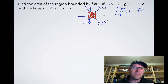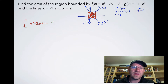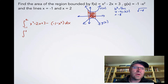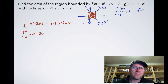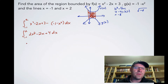To find the area, we take the integral from negative one to two of f of x minus g of x dx — that is, the integral of (x squared minus 2x plus 3) minus (negative one minus x squared) dx. Combining like terms: x squared plus x squared gives 2x squared, negative 2x stays, and 3 plus 1 gives 4, so we integrate 2x squared minus 2x plus 4.